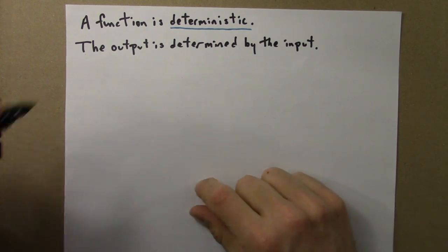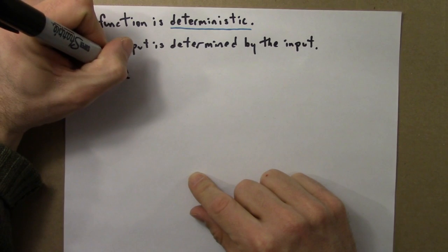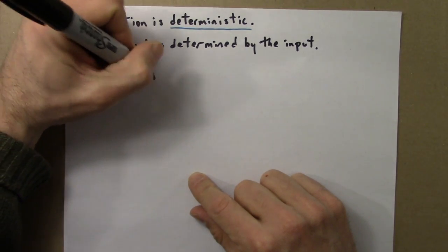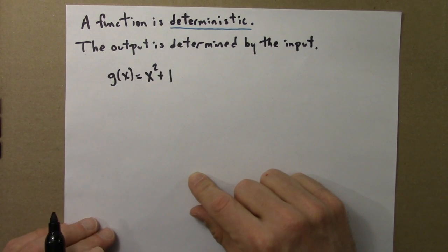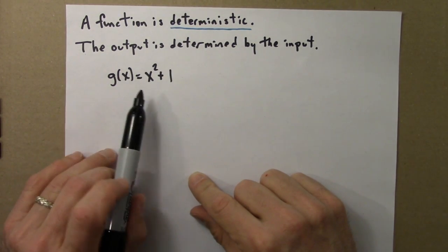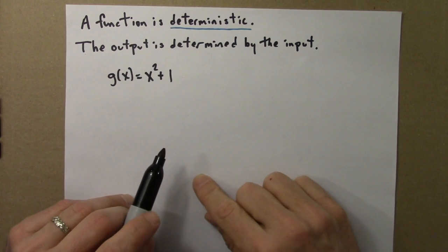As an example, let's go back to the square plus one function. So here's our rule. Give the function an input x, square it and add one, and that's the output.